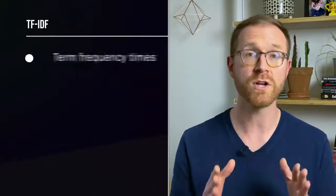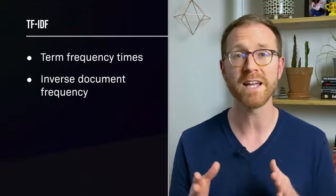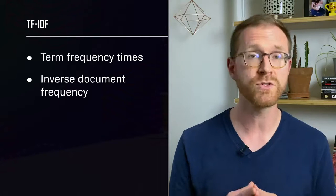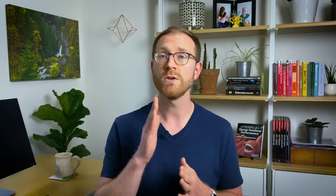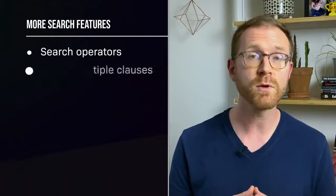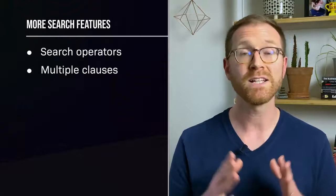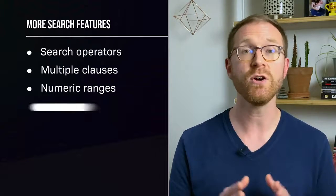You can also control the scoring algorithm that Redis Search uses. By default, it scores documents with a form of TF-IDF, but it includes several other scoring algorithms and you can build your own with the extensions API. You can also weight results through a special score field in your hashes, or by assigning weights to sub-clauses of a query. A lot more search operators are available too — queries can use multiple clauses including numeric ranges and geo filters.